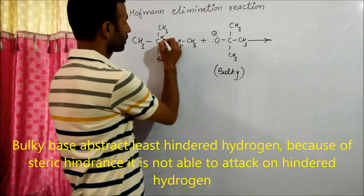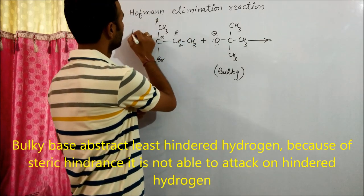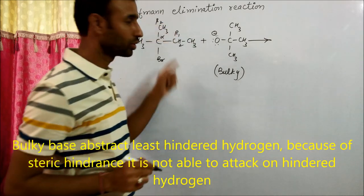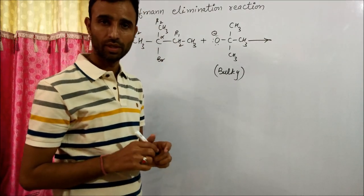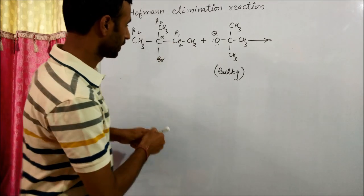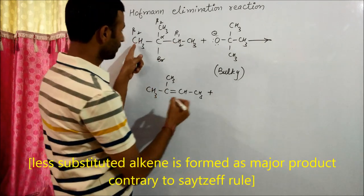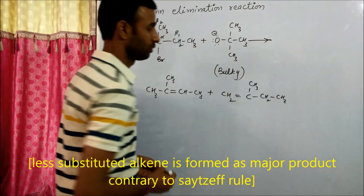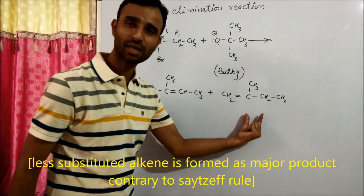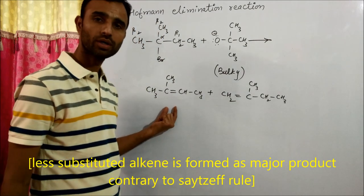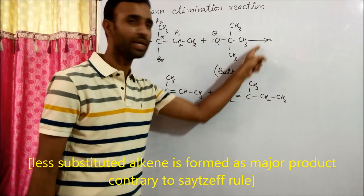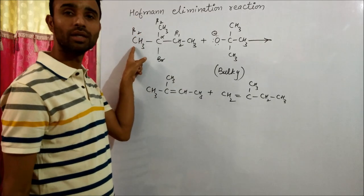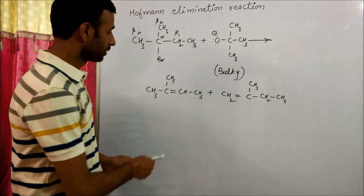This carbon is the alpha carbon. Beta 1 and beta 2 are different. If we remove the hydrogen from one side we get this molecule, and from the other side these are the same. This gives us a less substituted alkene and a more substituted alkene. But since the base is bulky, it cannot attack this hydrogen — rather it attacks the least hindered hydrogen.